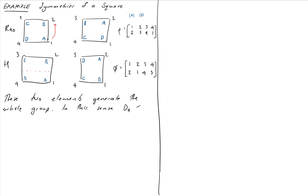In this sense, D4 is a subgroup of the symmetric group S4. Historically, in the 19th century, only permutation groups were considered initially — the abstract axiomatic definition of a group came later. It turns out that any finite group can be realized as a subgroup of some symmetric group, making permutation groups the most general possible groups. In the next video we'll introduce an alternative notation called cycle notation, which makes calculations more straightforward.